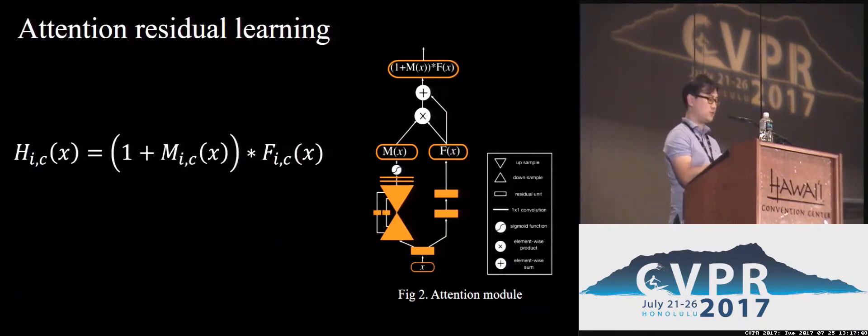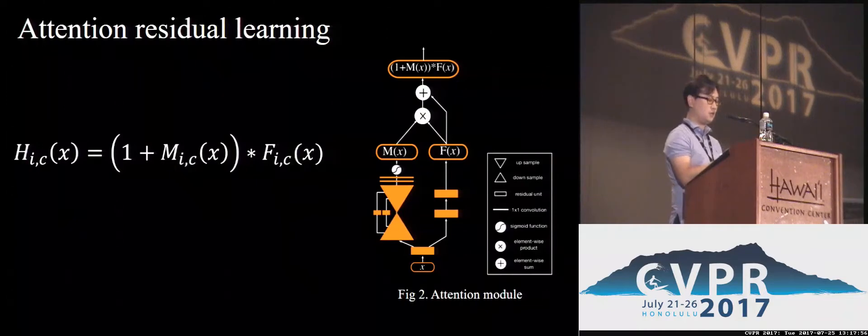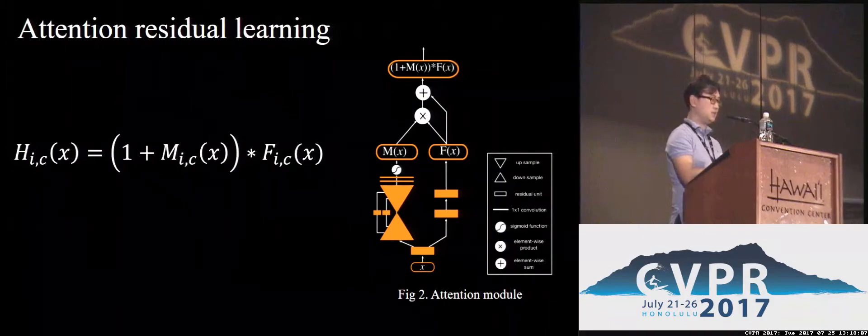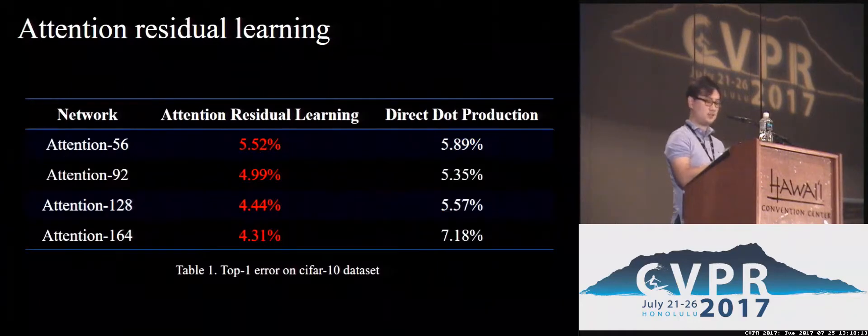Thus, we propose attention-residual learning to ease the problem. The output of each attention module is the sum of attention mask-weighted features and the original ones. Combining with the stacked attention modules, the mask branch can gradually enhance good features and suppress noise from trunk features. By using attention-residual learning, increasing the depth of residual attention network can improve the performance consistently.